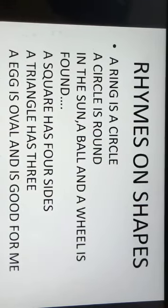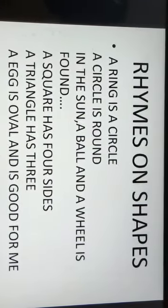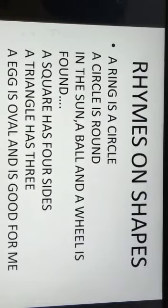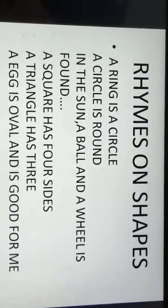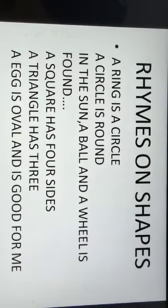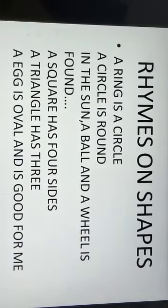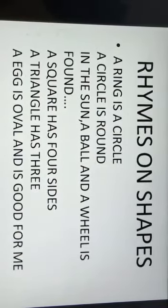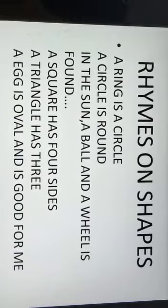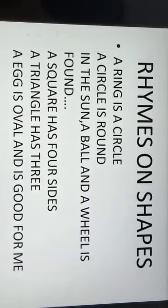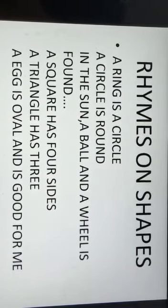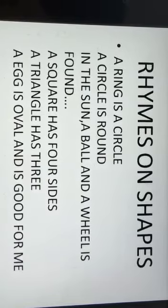Let us sing. A ring is a circle, a circle is round. In the sun a ball and a wheel is found. A square has four sides, a triangle has three sides. An egg is oval and is good for me.